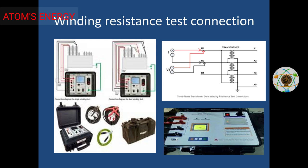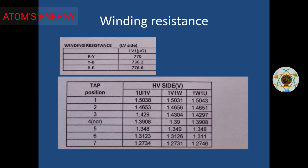Check the values — you can check RY, YB, and BR on the HV side. You can check LV side cables and measure the values in ohms. You can check the milliohm values. Check per tap as well — check the ohms. You must check the HV side ohms. This gives you a regular transformer winding resistance reading.